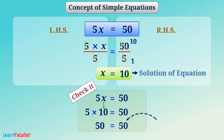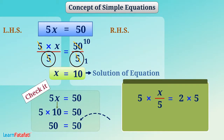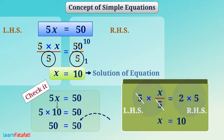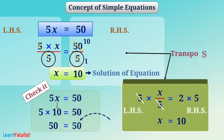Note that dividing by 5 on both sides is the same as taking 5 from LHS to RHS by changing the multiplication operation to division. We call such a way of solving an equation transposing.